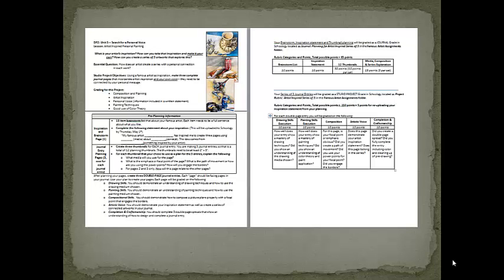In your packet, these are the three pages you got. This is the first page — the back and the front. You'll notice there's the pre-planning information and then the journal entry information. This is planning for a journal entry. You're only going to do one of the inspiration pages and then three of the planning pages.